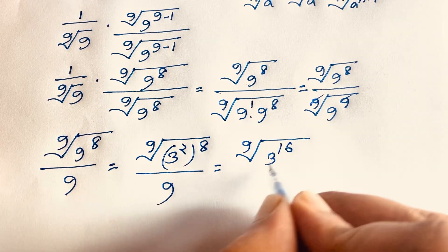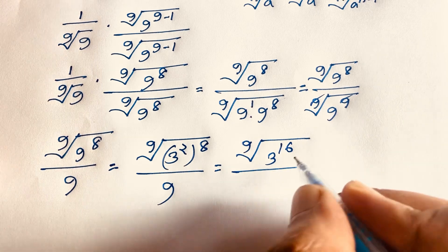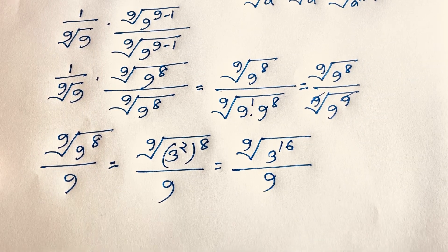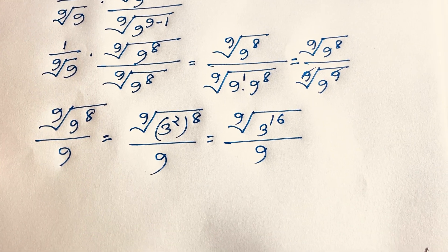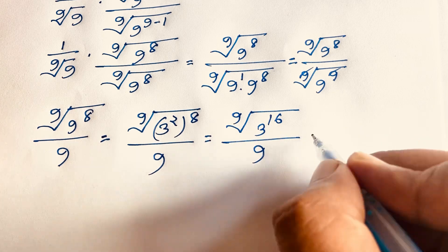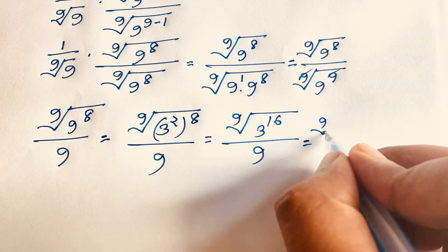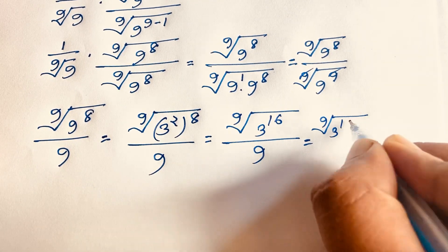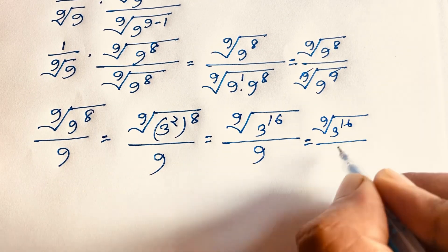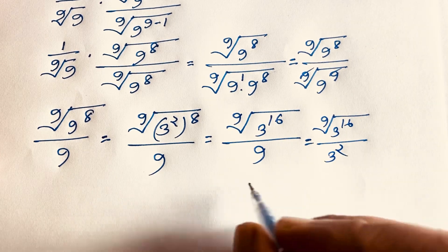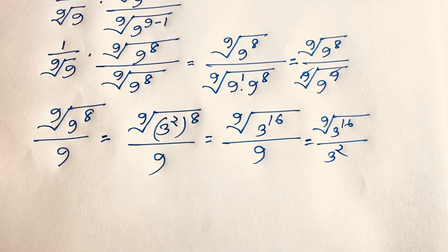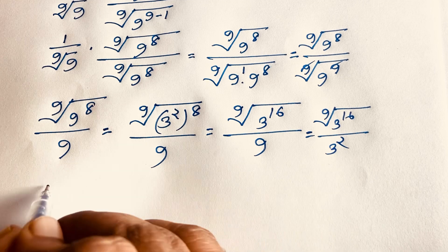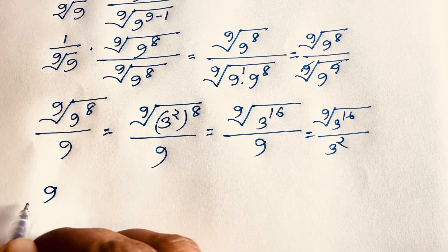So this expression becomes the 9th root of 3 to the power 16, over the 9th root of 3 to the power 2. And 3 to the power 2 equals 9. So this expression becomes 3 to the power 16/9, with denominator 3 to the power 2.